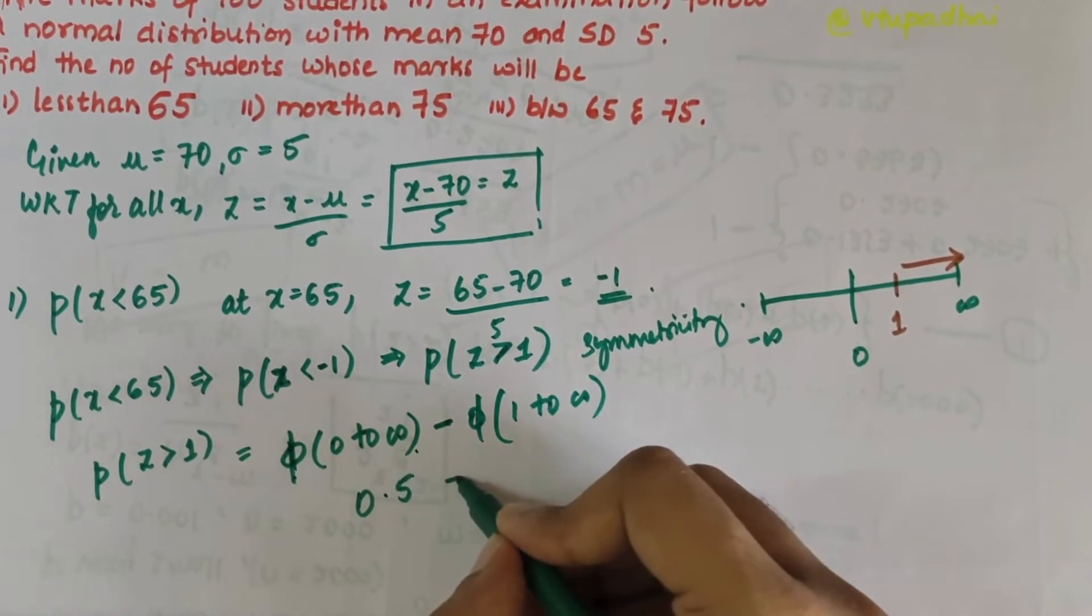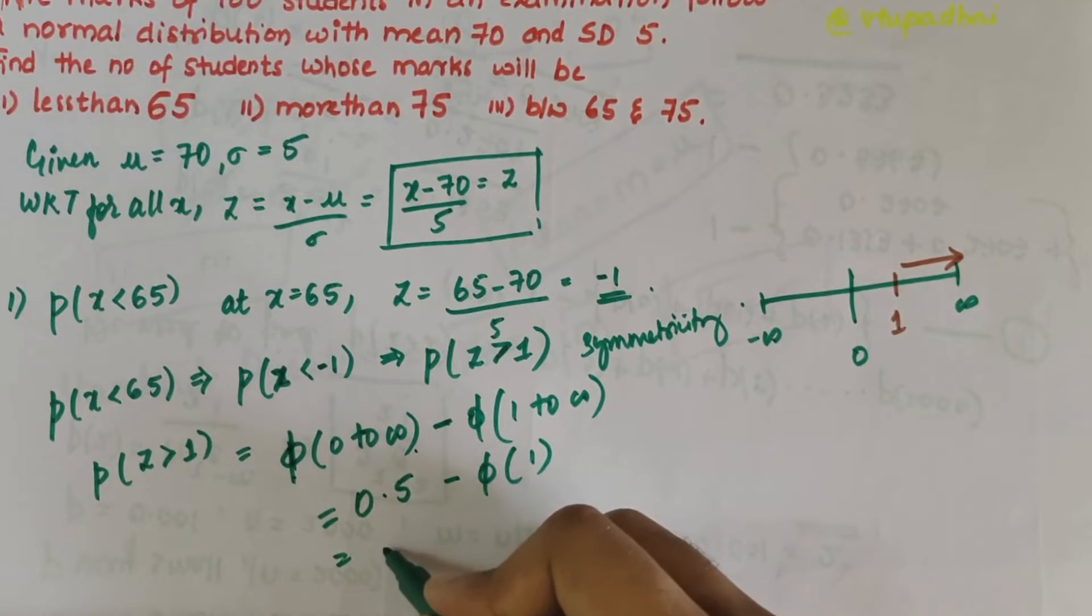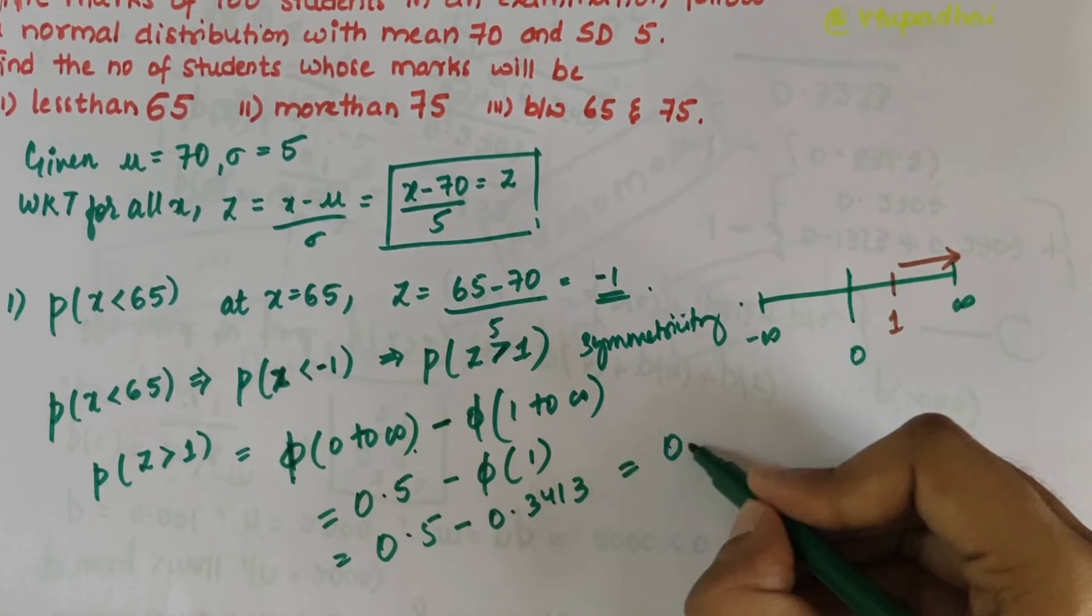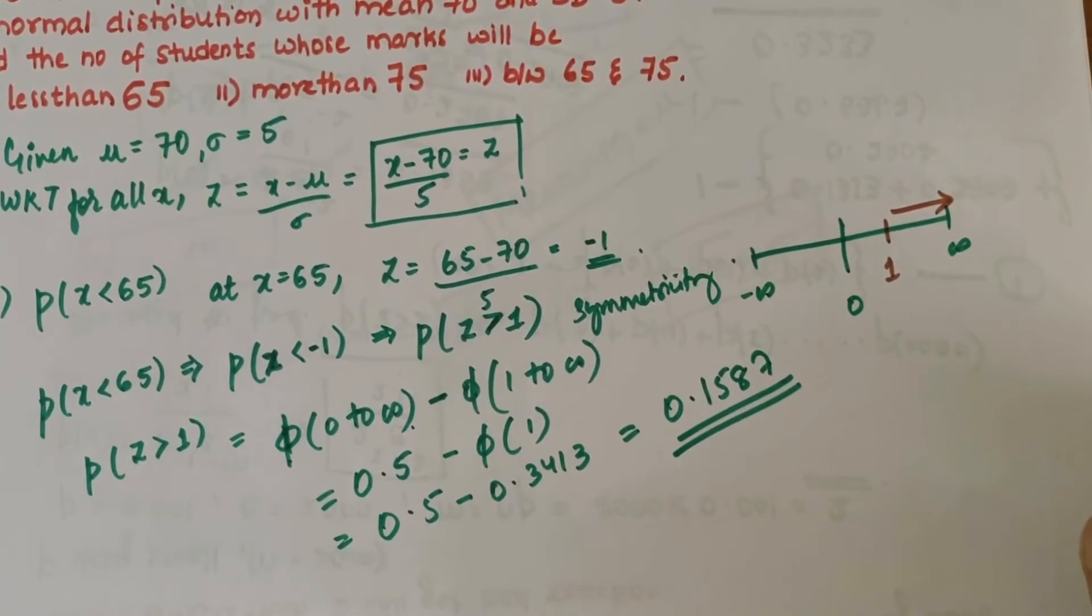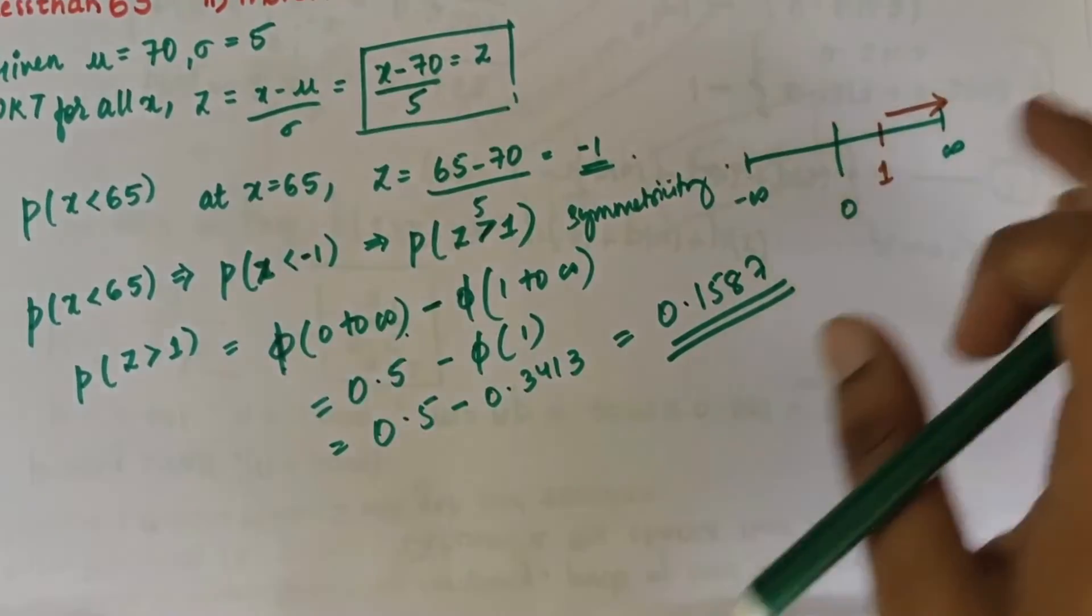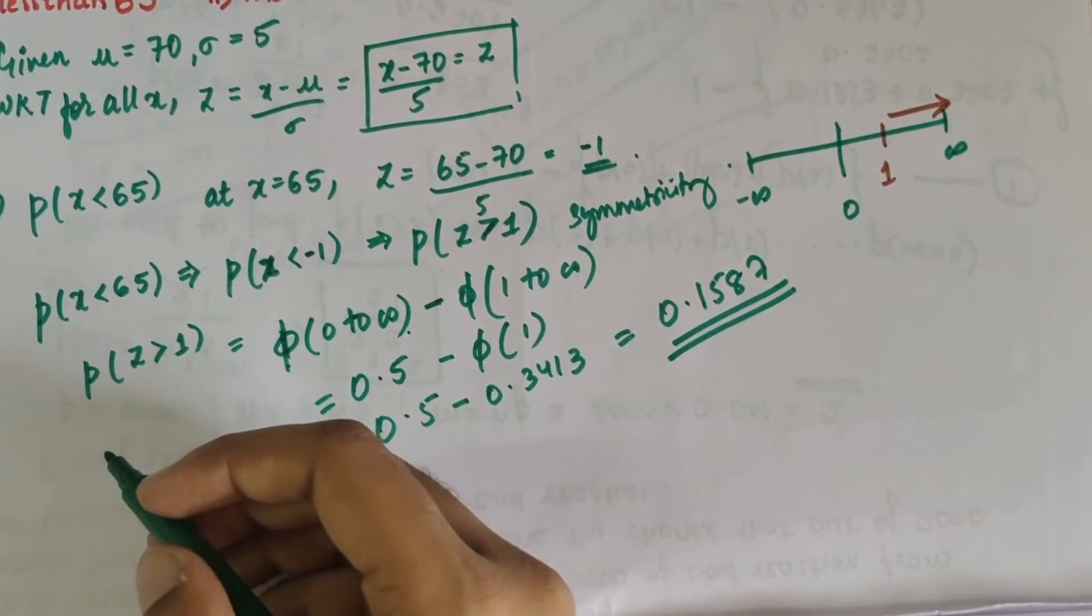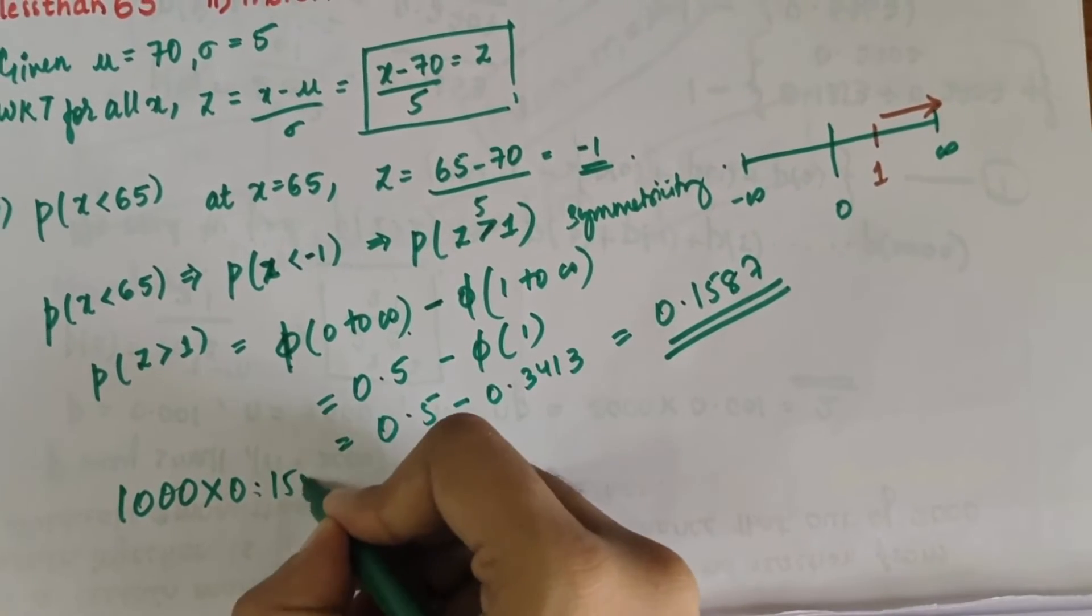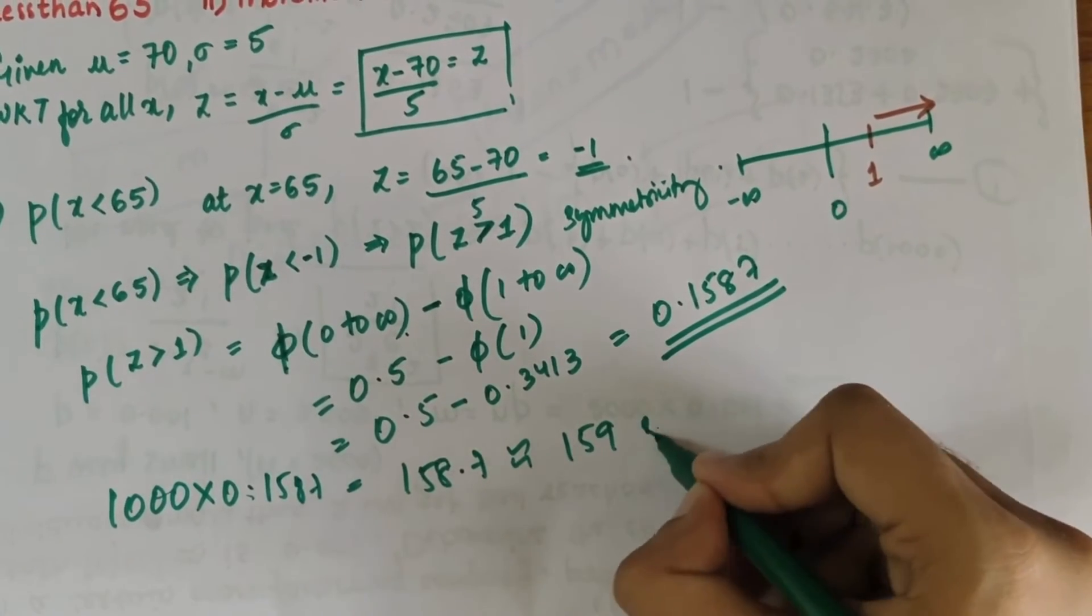P(0 to ∞) is 0.5. From the standard normal table, P(1) is 0.3413. Subtracting, the answer is 0.1587. So the number of students scoring less than 65 would be 1000 × 0.1587 = 158.7, or 159 students.